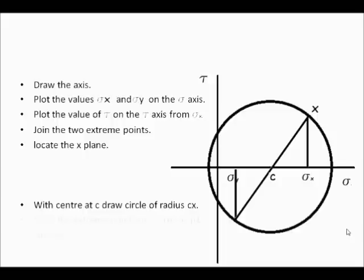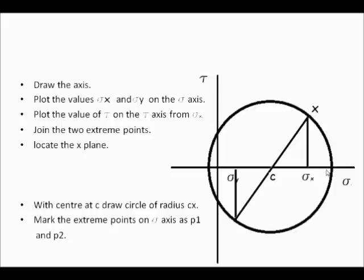The extreme points on the circle represent the maximum and minimum stresses. The maximum x-axis coordinate where the circle intersects is the principal stress P1, and the minimum is P2. These are the maximum and minimum stresses acting in the principal planes — the principal stresses P1 and P2.